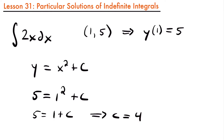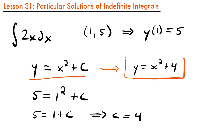Now that we know c is equal to 4, we can rewrite our original answer to be y equals x squared plus 4. We now have a particular solution to this integral. Our function still has a derivative of 2x, but now we have a specific value of c given this information, which we call the initial condition. Now that you've seen how to find a particular solution, let's look at some more examples.